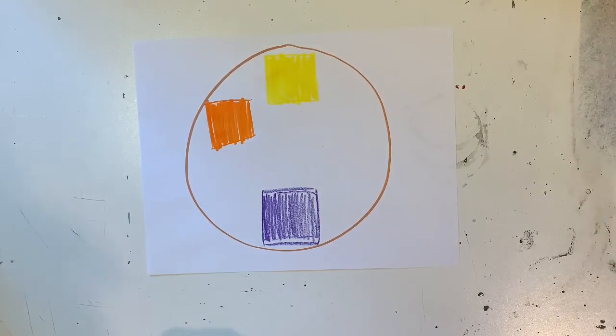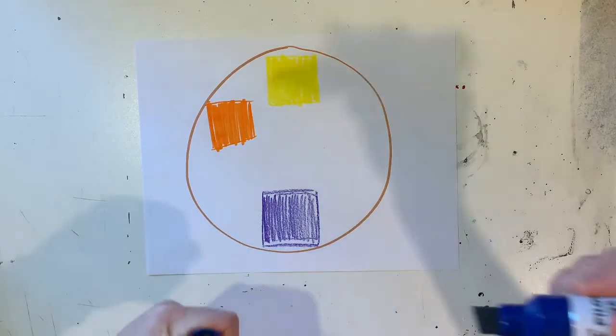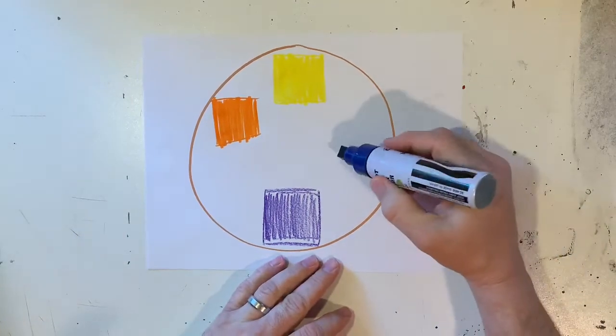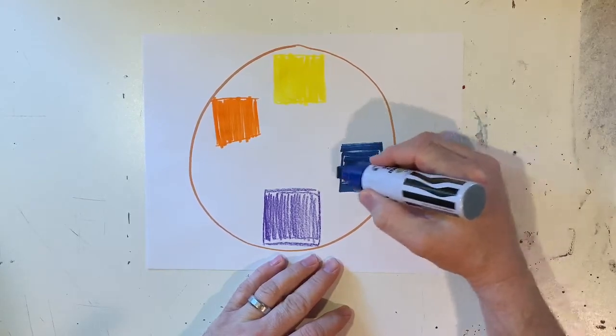Then across from that orange, what I want to do is I'm going to find another color and it's going to be blue. So right over here I'm going to take this big old blue marker and make a blue square and color it in.